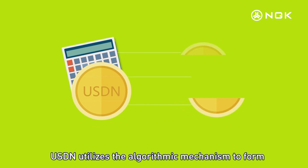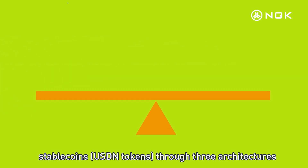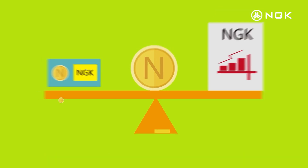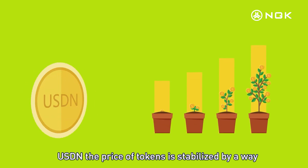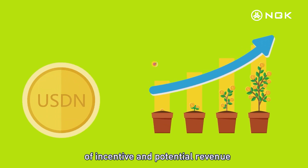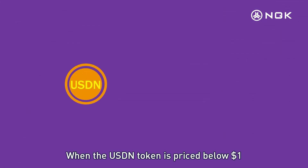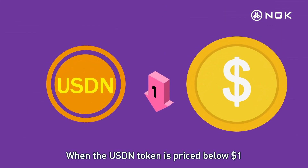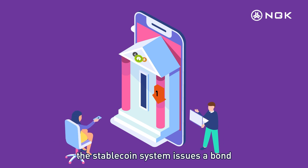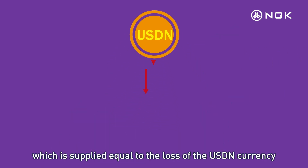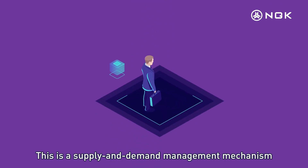Through USDN payment, transaction costs are greatly reduced and efficiency improved within the blockchain's underlying framework. The decentralization of the blockchain also ensures the security of storage and transactions. USDN utilizes an algorithmic mechanism, forming stablecoins through three architectures and balancing currency price with bonds and equity. When the USDN token is priced below one dollar, the stablecoin system issues a bond voucher.